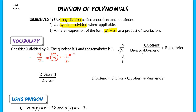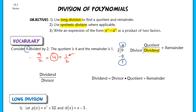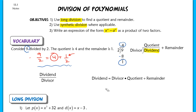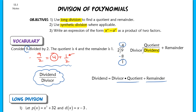However, the terms dividend and divisor are ones you probably haven't looked at in a while. The dividend is the number being divided — in this case, 9. The divisor is the number you're dividing by, so 2 is the divisor, and 4 is the quotient. Your dividend can be rewritten as the product of your divisor and quotient plus your remainder. The dividend is in the numerator and the divisor is in the denominator.